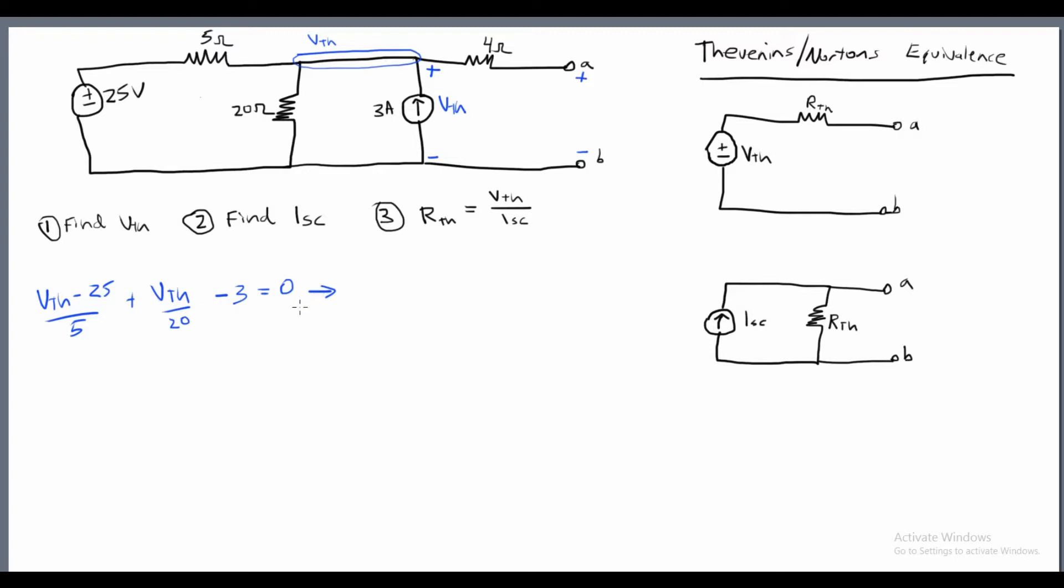So now we got an equation, one equation, one unknown, and we can just simply solve it. So doing some algebraic gymnastics here, VTH over 5. This is going to pop out of 5 plus VTH over 20 minus 3 is equal to 0. So if I want this to be rationalized with the denominator equal to 20, I have to multiply top and bottom by 4. So I'm going to get 4 VTH plus 1 VTH over 20. So it's going to be 5 VTH over 20.